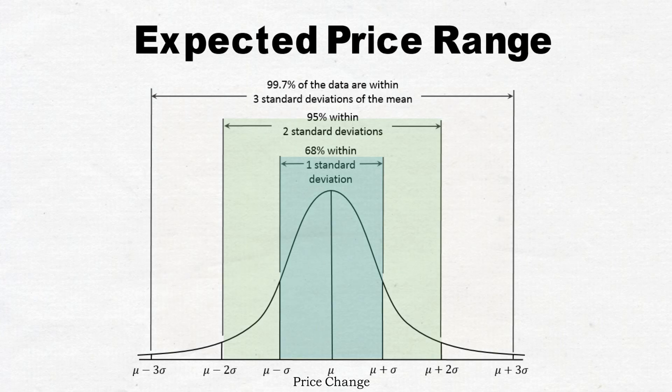This isn't necessarily a very realistic distribution for stock prices because bigger moves happen far more often than they should according to a normal distribution. Furthermore, prices can move more to the upside than they can to the downside.